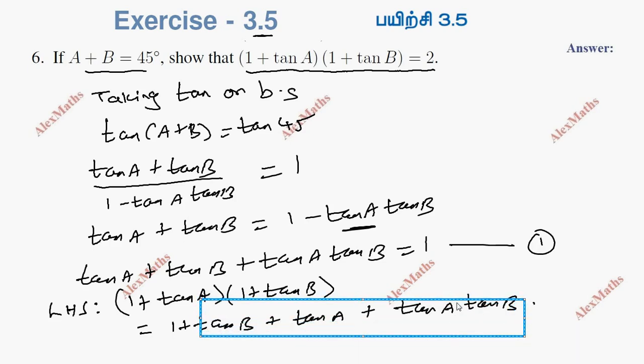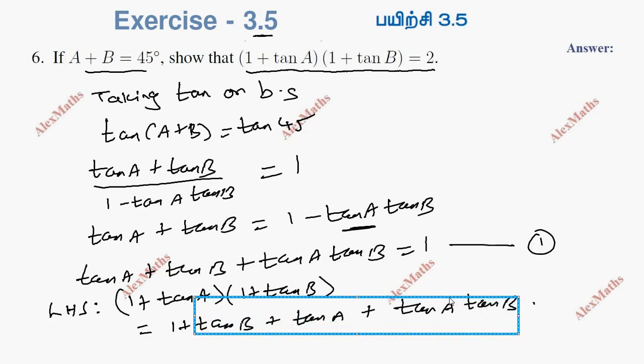So this becomes 1 plus tan a plus tan b plus tan a·tan b, which equals 2.